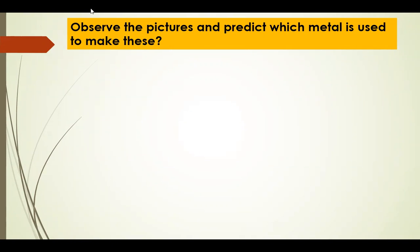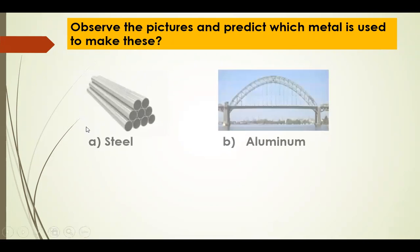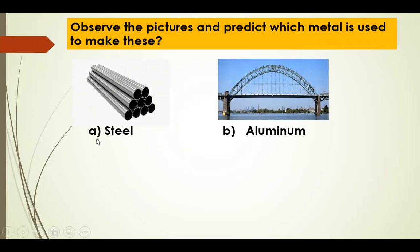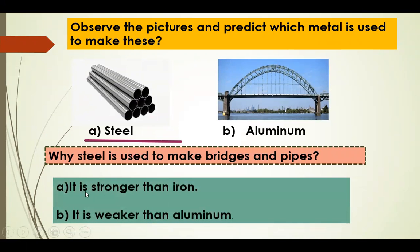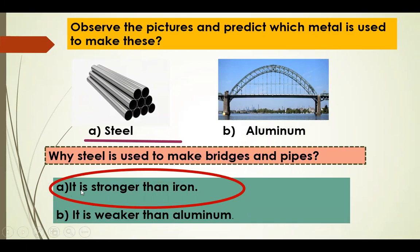Observe the pictures and predict which metal is used to make these. Options: A — Steel, B — Aluminium. Why is steel used to make bridges and pipes? Options: It is stronger than Iron. It is weaker than Aluminium. The answer is A — it is stronger than Iron. Steel is stronger than Iron.